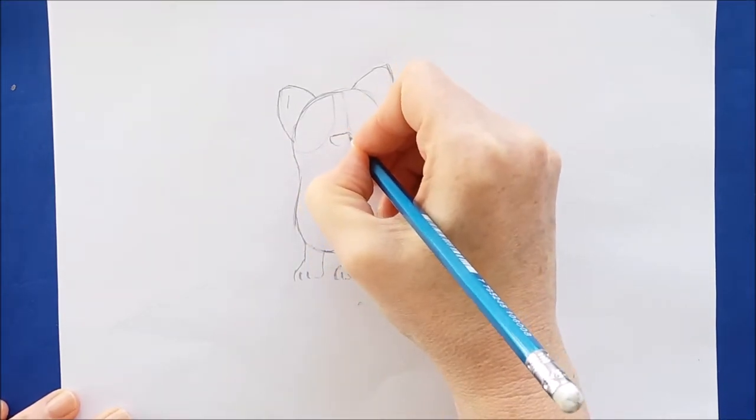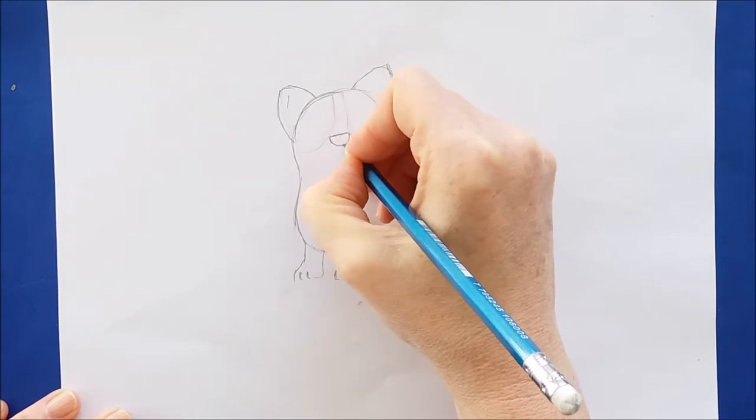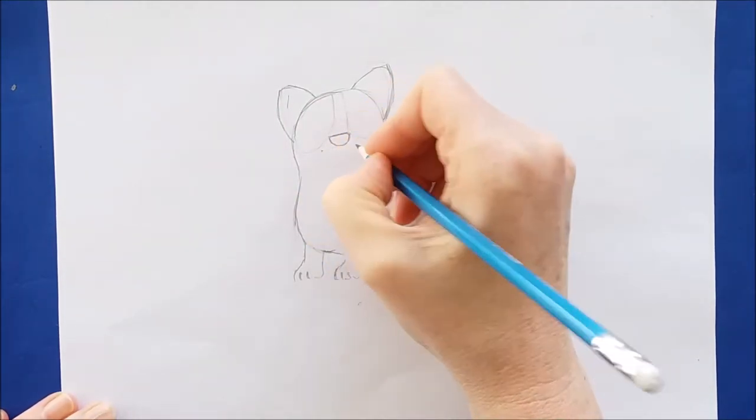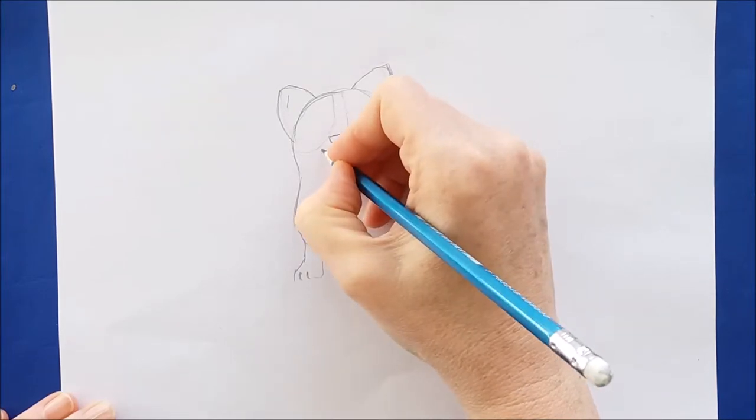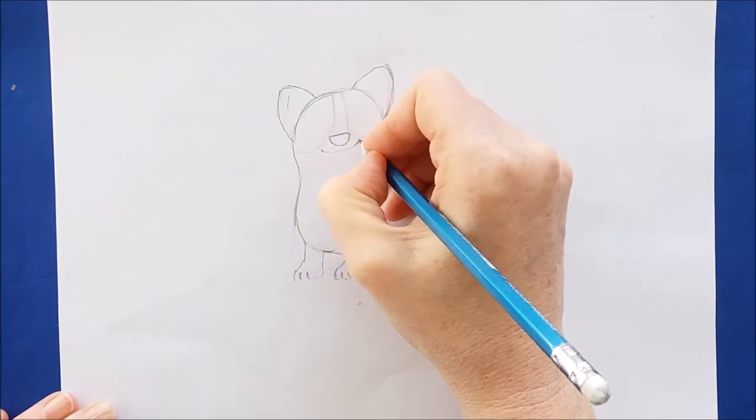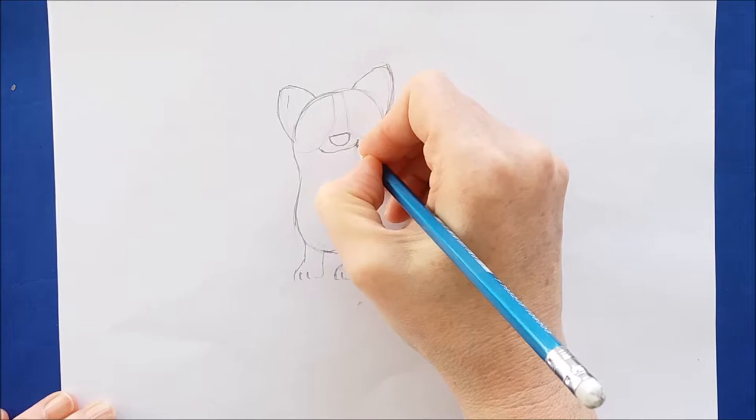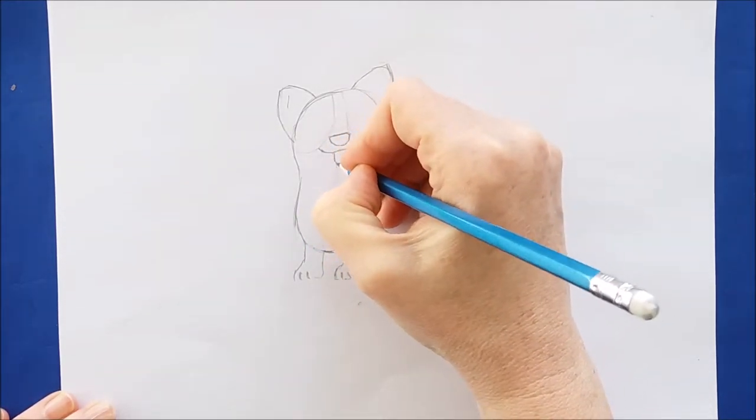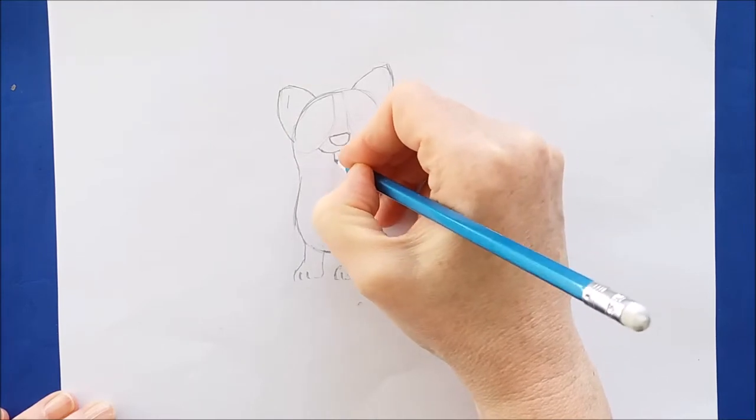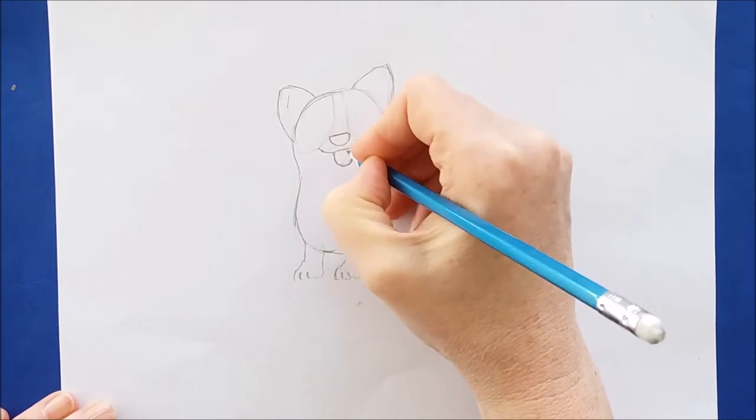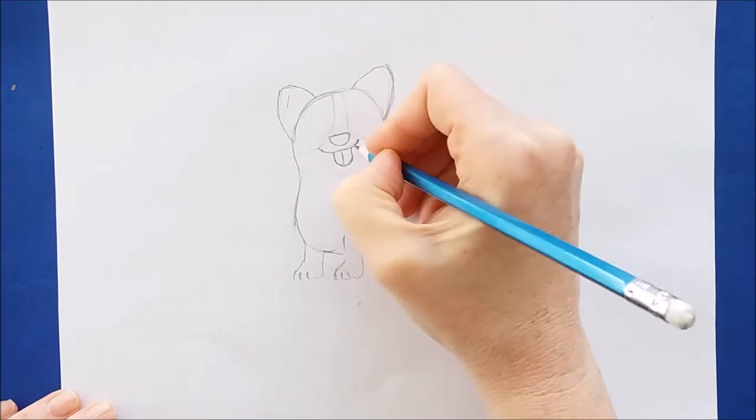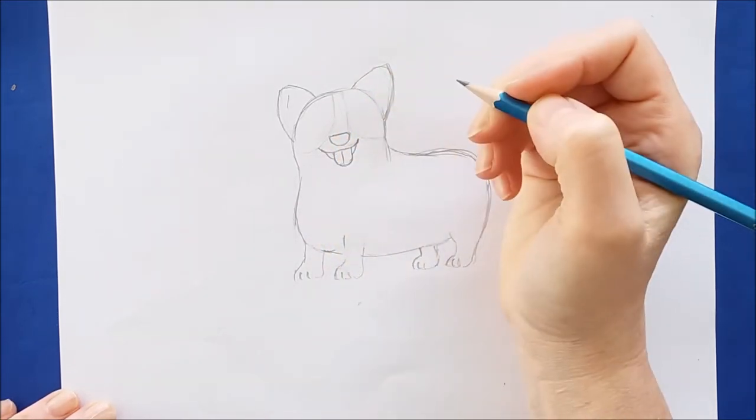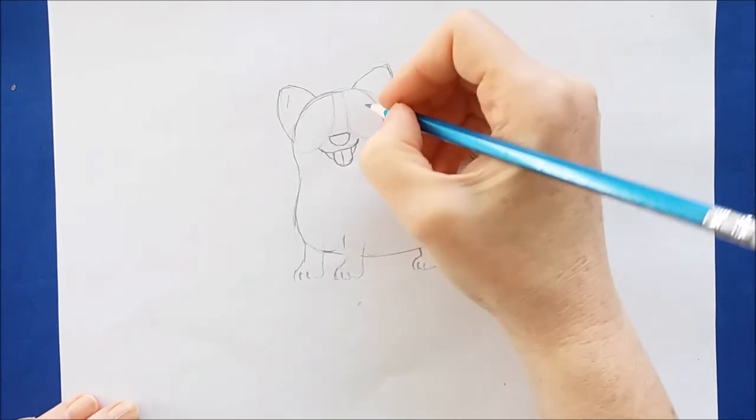And then my corgi is going to have kind of a smile. So I'm just drawing a little smile here. And his tongue will be hanging out. So the tongue is just a U shape. And then I'll connect the corners of the mouth to the tongue, just like this.